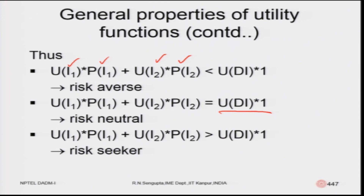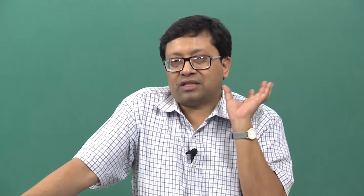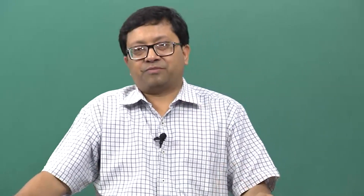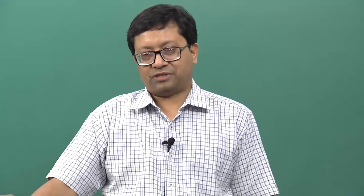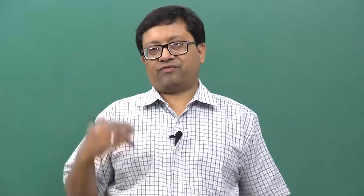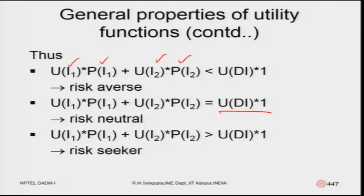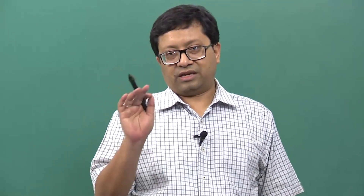For a risk-seeking person, the expected utility of the non-deterministic event exceeds the utility of the sure event. The person is attracted to the non-deterministic decision, believing that in the long run, the average return will be much higher. The risk-averse person focuses on the downside, the risk-neutral person is indifferent, and the risk-seeking person focuses on the upside.